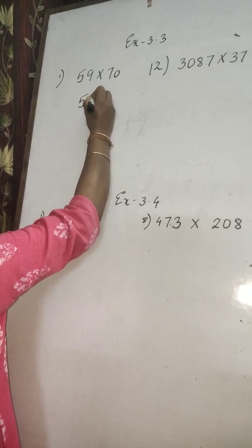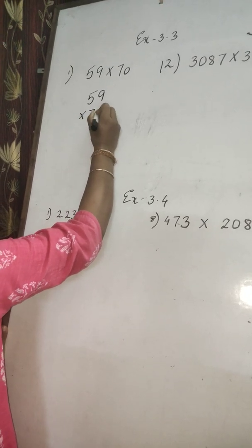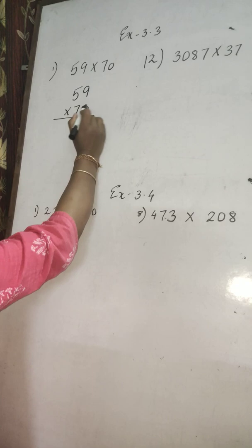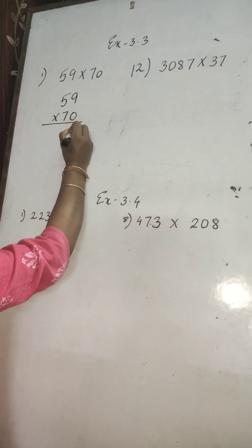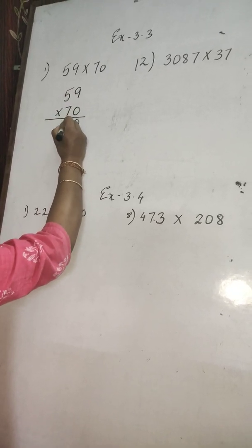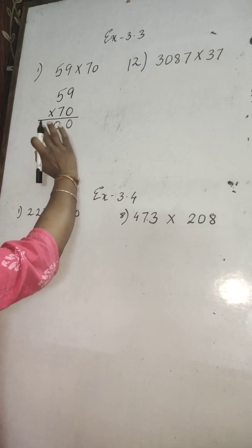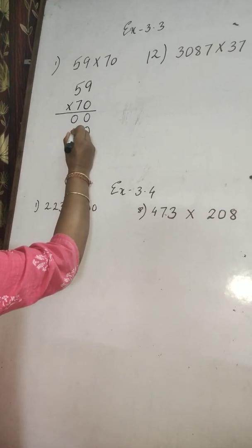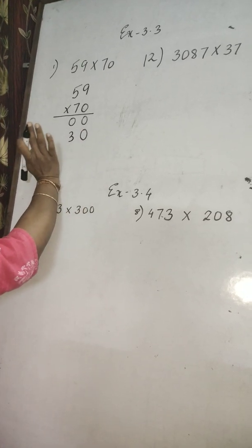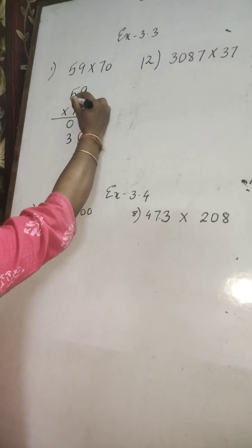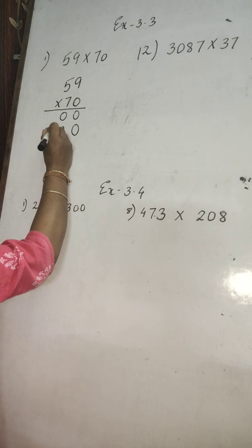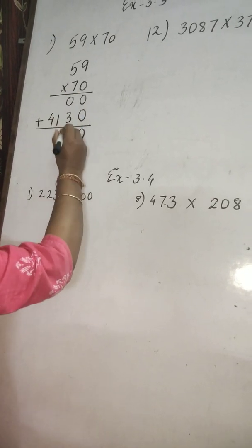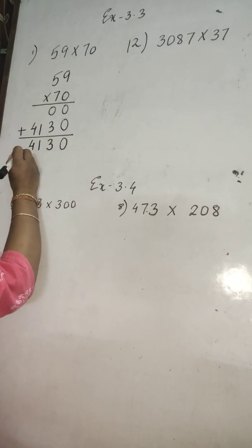Number one: 59 multiply into 70. First, you multiply with the digit in the ones place, that is 0. 0 into 9 is always 0, and 0 into 5 is 0. Now to multiply with the second digit, you have to leave the first place. Put 0. 7 into 9 is 63 — write 3 and carry 6. 7 into 5 is 35, plus 6 is 41. Give the plus sign and add: 0 plus 0 is 0, 0 plus 3 is 3, then 1 and 4. The answer is 4130.